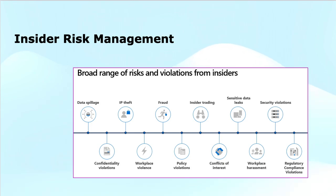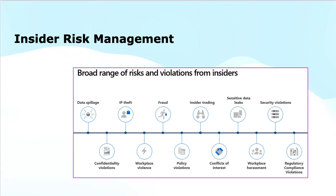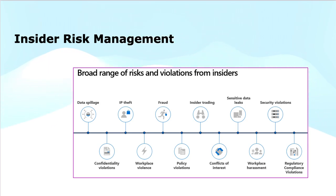The workflow defines the different types of risks or violations from insiders that can take place. First is data spillage — the act of unintentionally or intentionally sharing sensitive data outside the organization, leading to the exposure of confidential information. Confidentiality violation is the breaching of a confidentiality agreement by sharing private or protected information like trade secrets, client data or financial details.